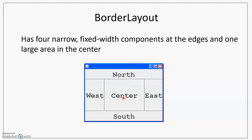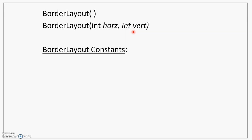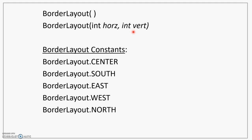For the Frame, the default layout is BorderLayout. The default constructor creates a basic border layout, and the second constructor allows you to specify horizontal and vertical gaps — spaces between the components. Because there are five sections in BorderLayout, we have constants: CENTER, SOUTH, EAST, WEST, and NORTH.